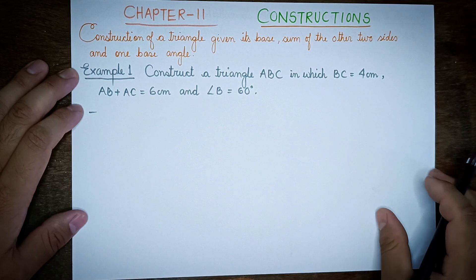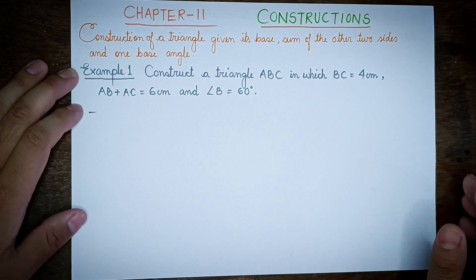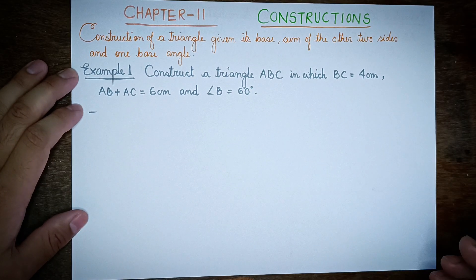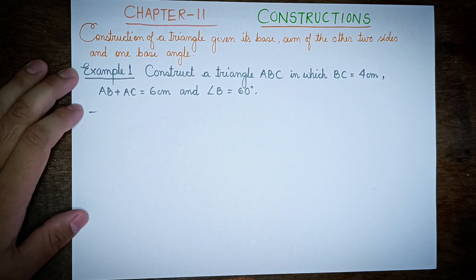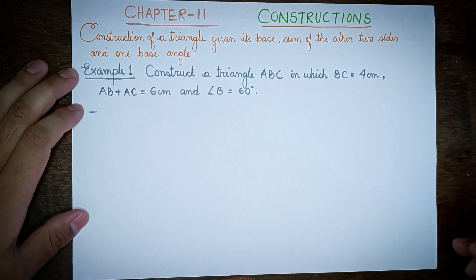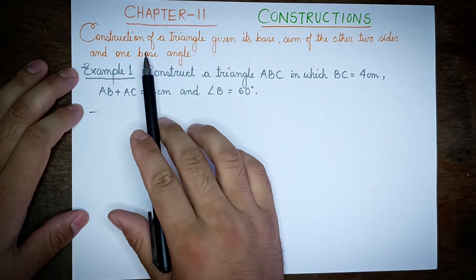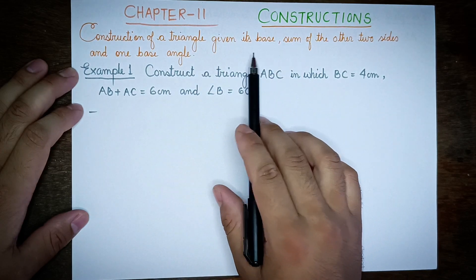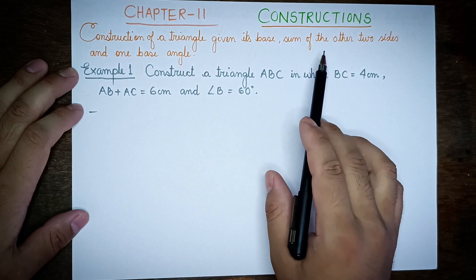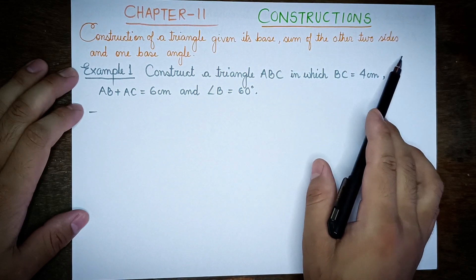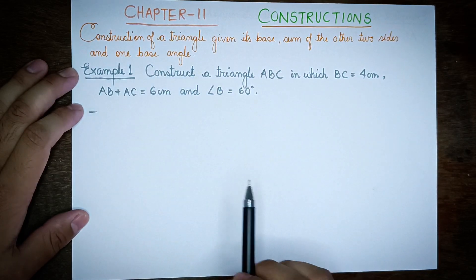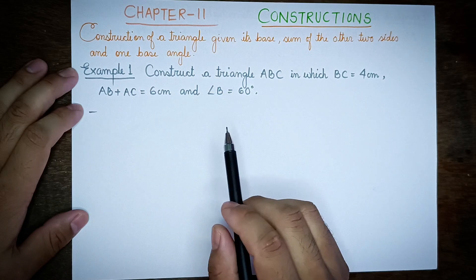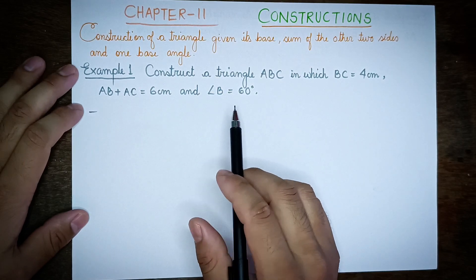Hello guys! Welcome to my channel! I'm going to talk about chapter number 11, Constructions — specifically, construction of a triangle given its base, the sum of the other two sides, and one base angle.